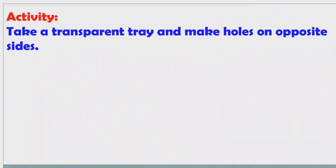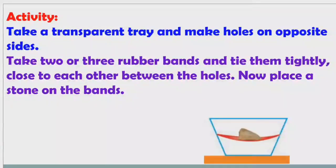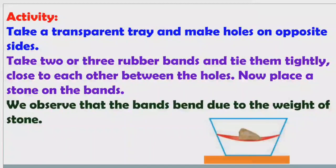Now we will see another activity. Take a transparent tray and make holes on opposite sides. Take two or three rubber bands and tie them tightly between the holes. Now place a stone on the bands. We can see the rubber bands bend downwards due to the weight of the stone.